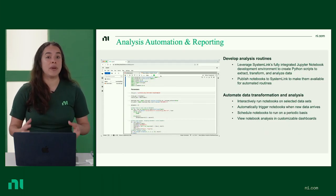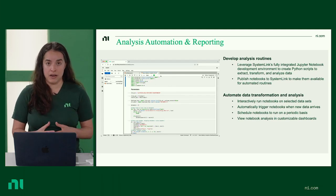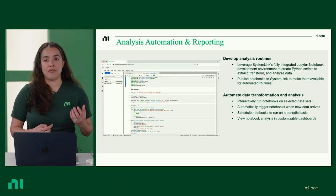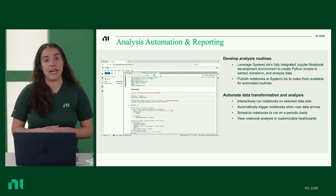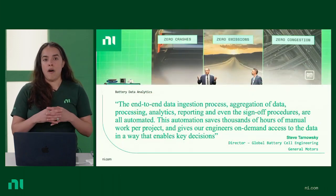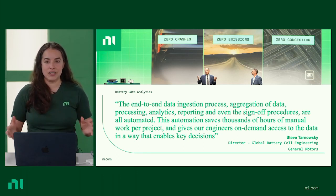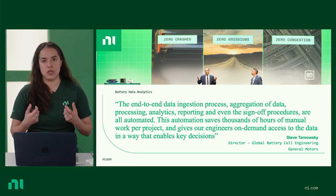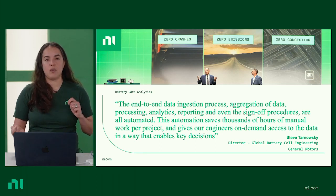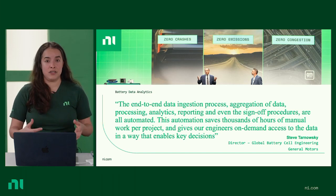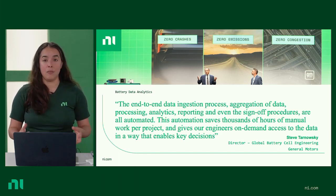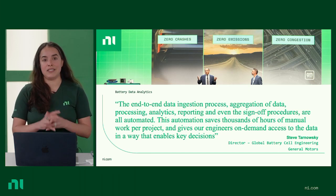Of course, we can automate analysis and reporting. You can create interactive or automated report analysis using Jupyter, and have those results stored in a variety of formats including HTML and PDF. This entire end-to-end data ingestion, aggregation, processing, analytics, reporting, and sign-off process really added benefit to GM's Ultium project — they were able to save thousands of man hours at the start of the project by leveraging SystemLink, and there's more to come as they continue to optimize their test operation process.